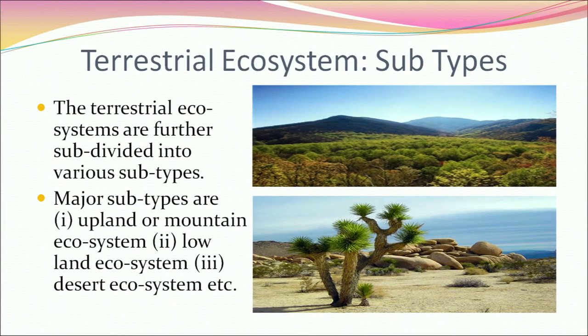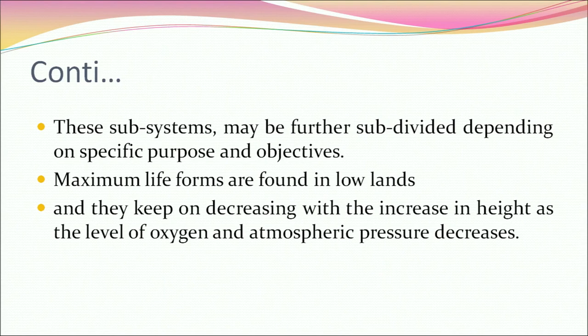Terrestrial ecosystems are further subdivided into various subtypes. Major subtypes include upland or mountain ecosystem, lowland ecosystem and desert ecosystem. These sub-ecosystems may be further subdivided depending on specific purpose and objectives. Maximum life forms are found in lowlands and they keep decreasing with increase in height as the level of oxygen and atmospheric pressure decreases.